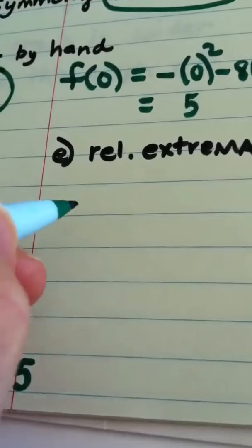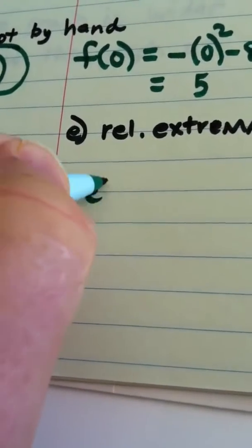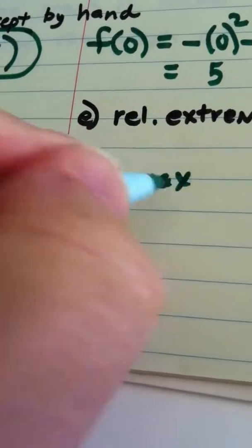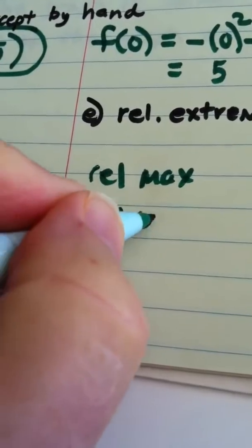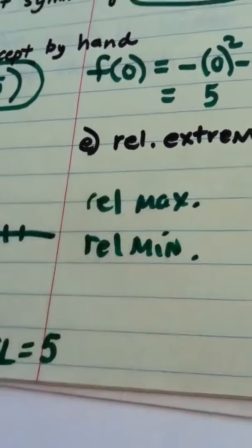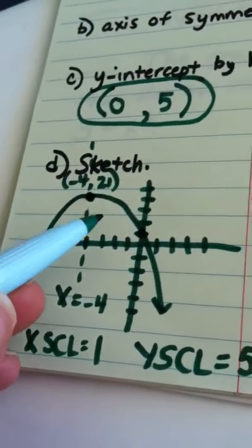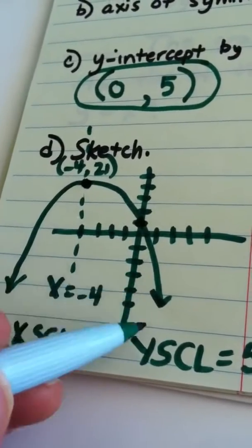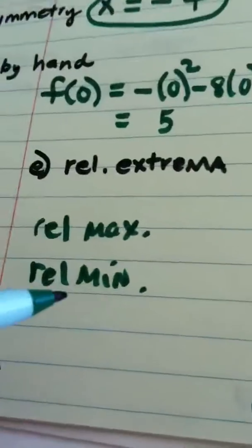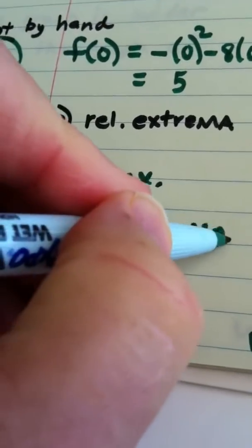The relative extrema means what is the relative max and what is the relative min. Well let's see, the relative minimum here, this graph keeps dropping. So the correct answer for relative minimum would be none.